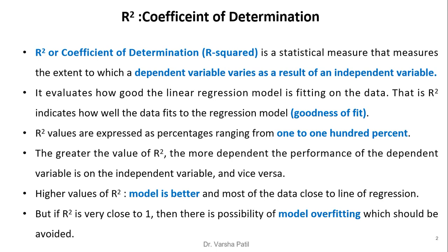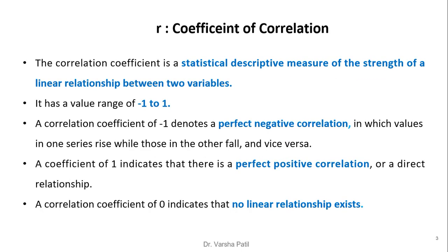The greater the value of R-squared, the more dependent the performance of the dependent variable is on the independent variable, or vice versa. Higher values of R-squared mean the model is better and most of the data is close to the line of regression. But if R-squared is very close to 1, there is a possibility of model overfitting, which should be avoided.